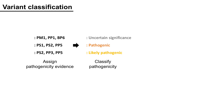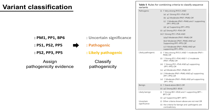After assigning variants with 28 types of evidence, it is time to classify their pathogenicities according to the combination of the evidence. There are rules for combining criteria to classify sequence variants. Using the rules, the pathogenicity can be classified into one of five categories: pathogenic, likely pathogenic, benign, likely benign, and uncertain significance. For example, if a variant has two pieces of evidence — PS3 and PM1 — the variant is classified as likely pathogenic.